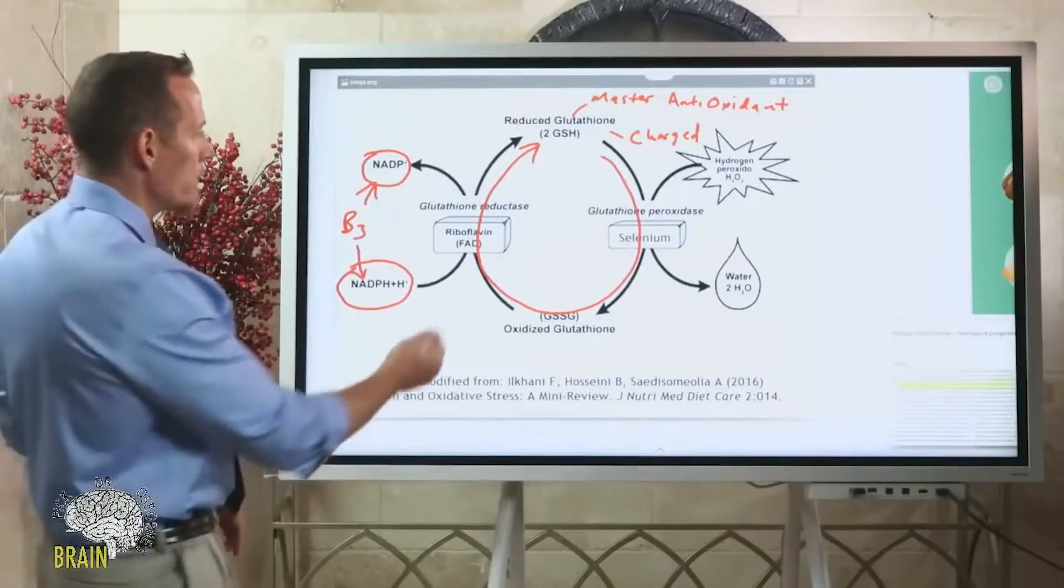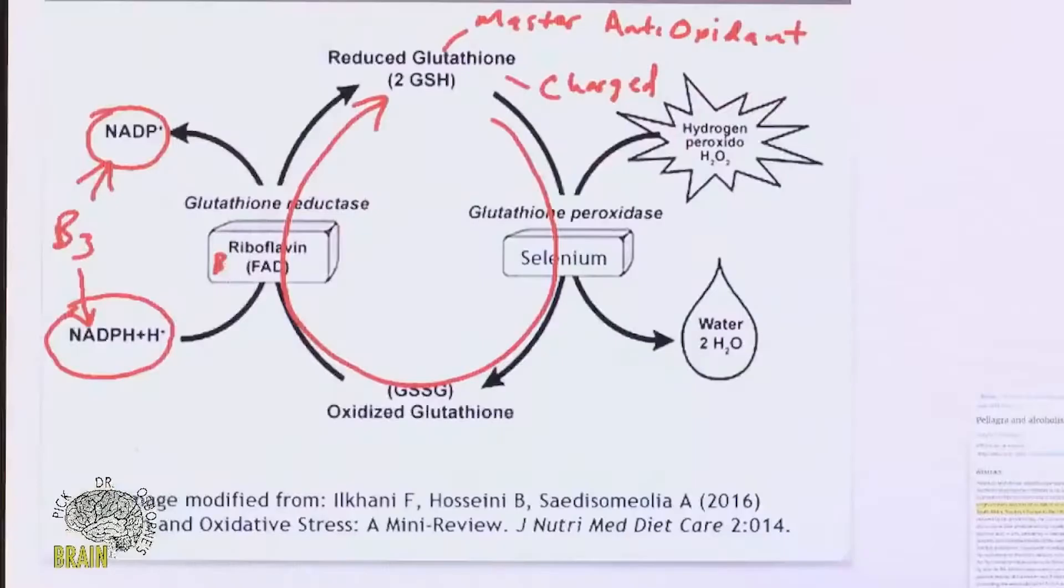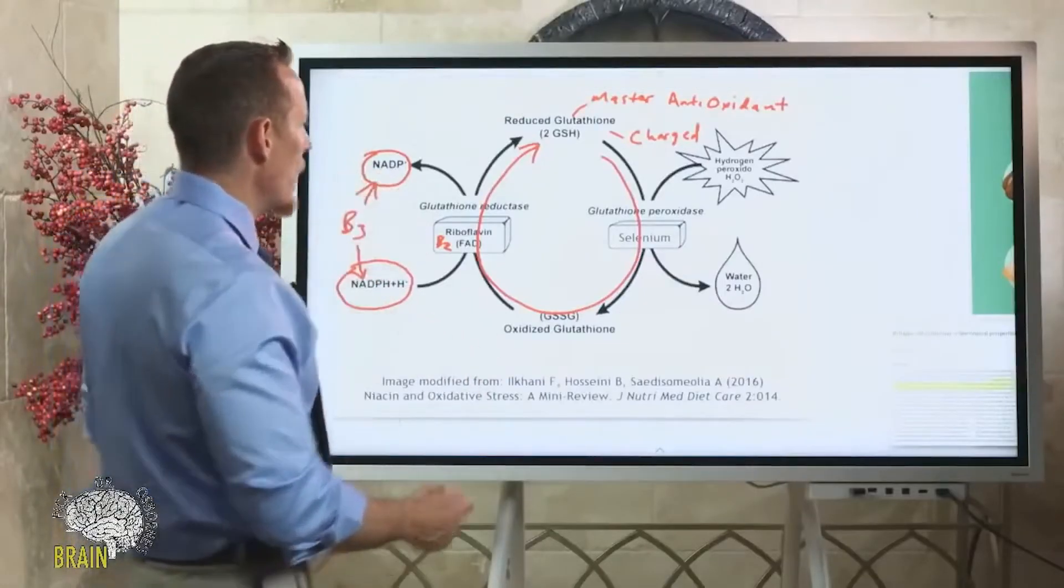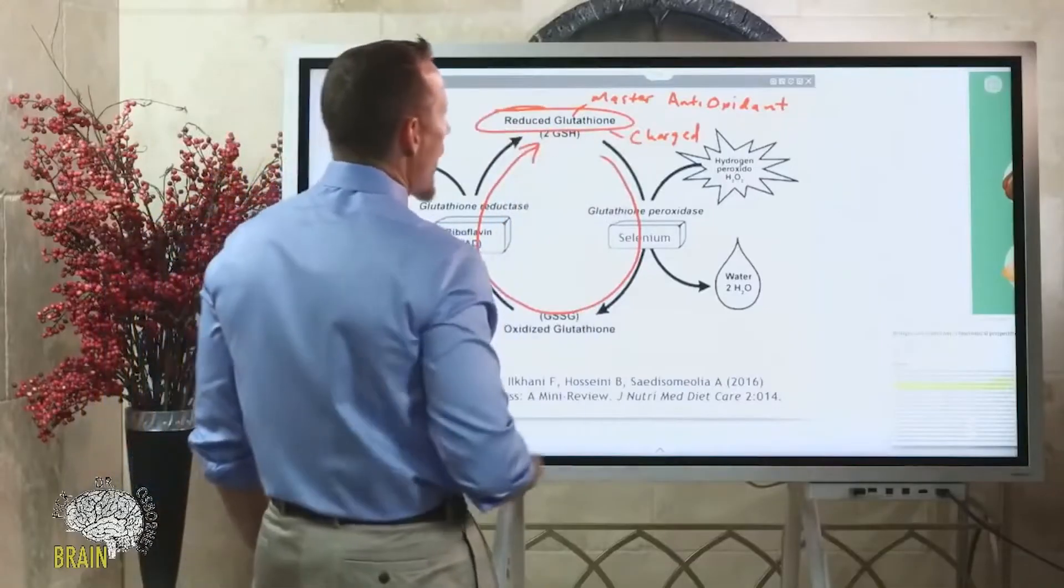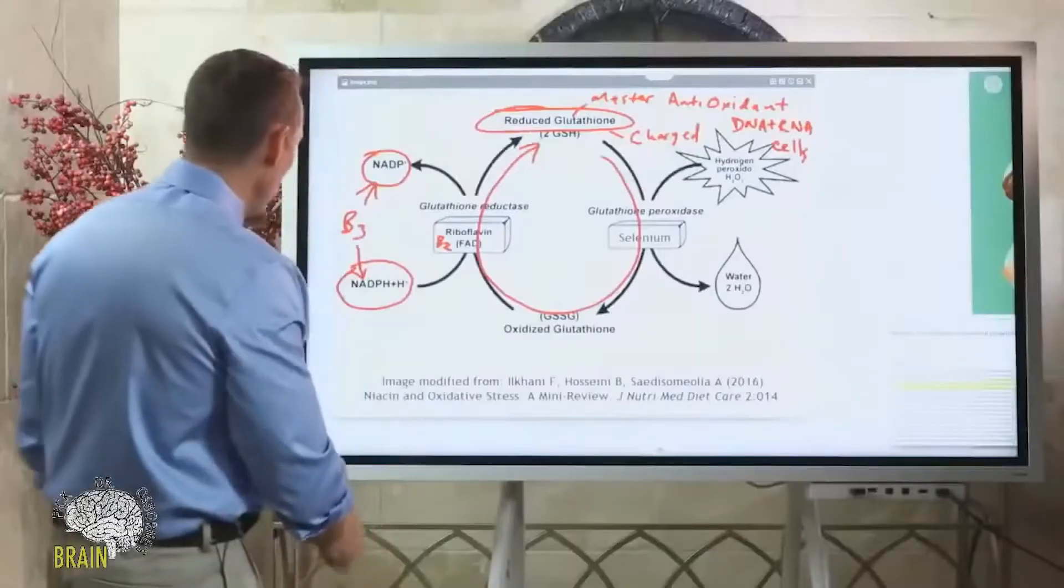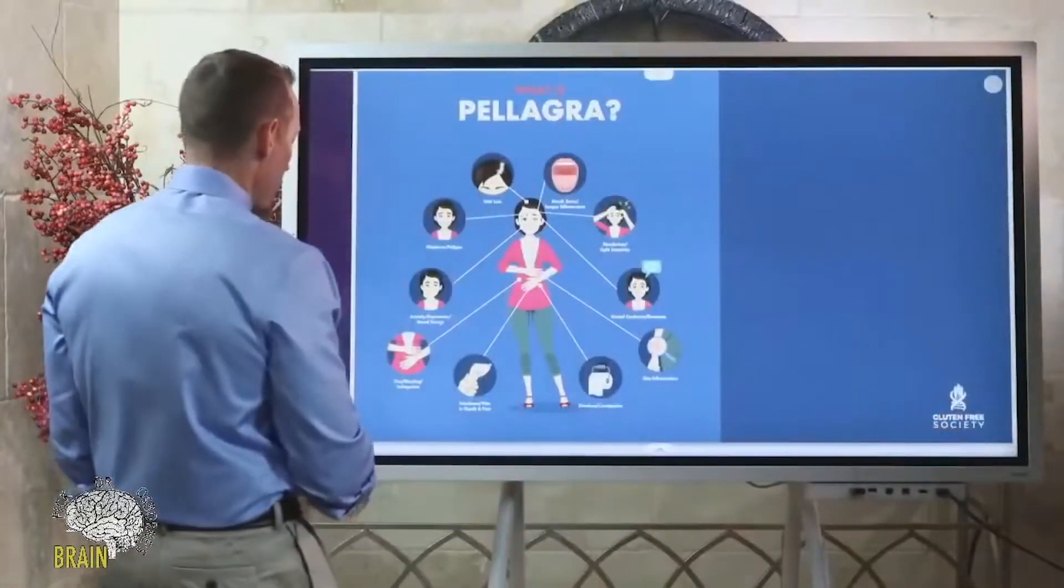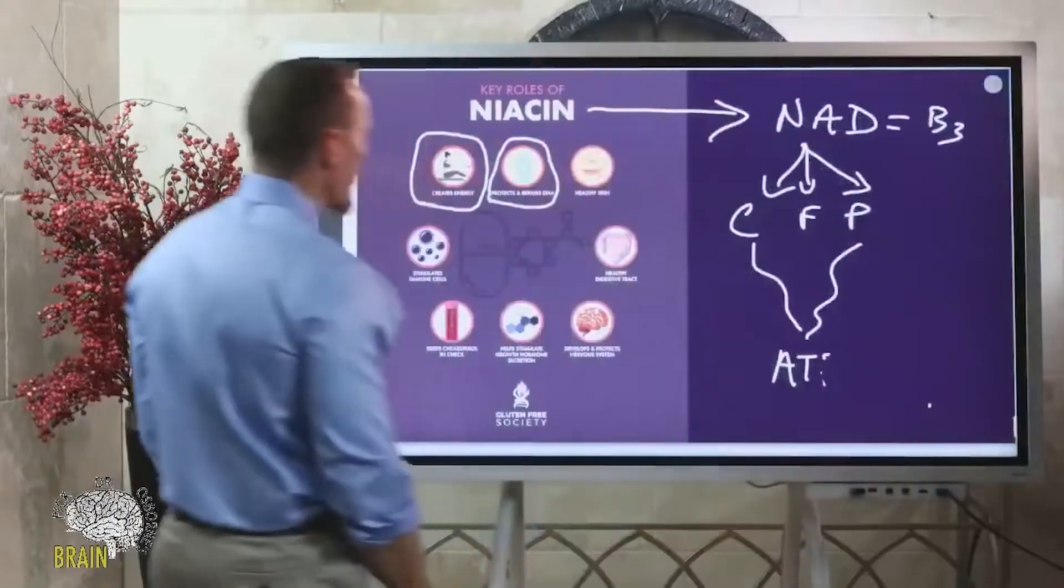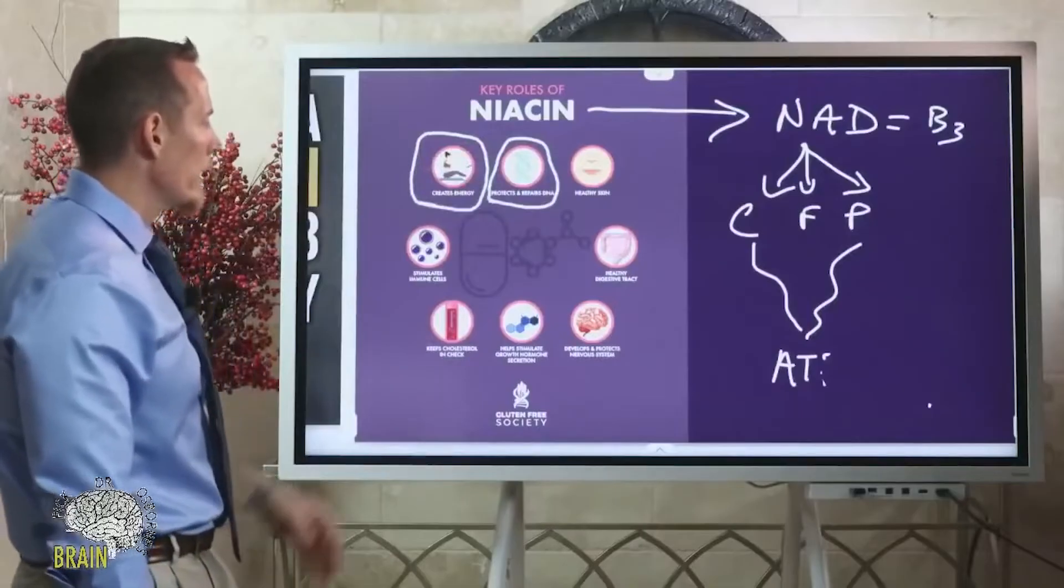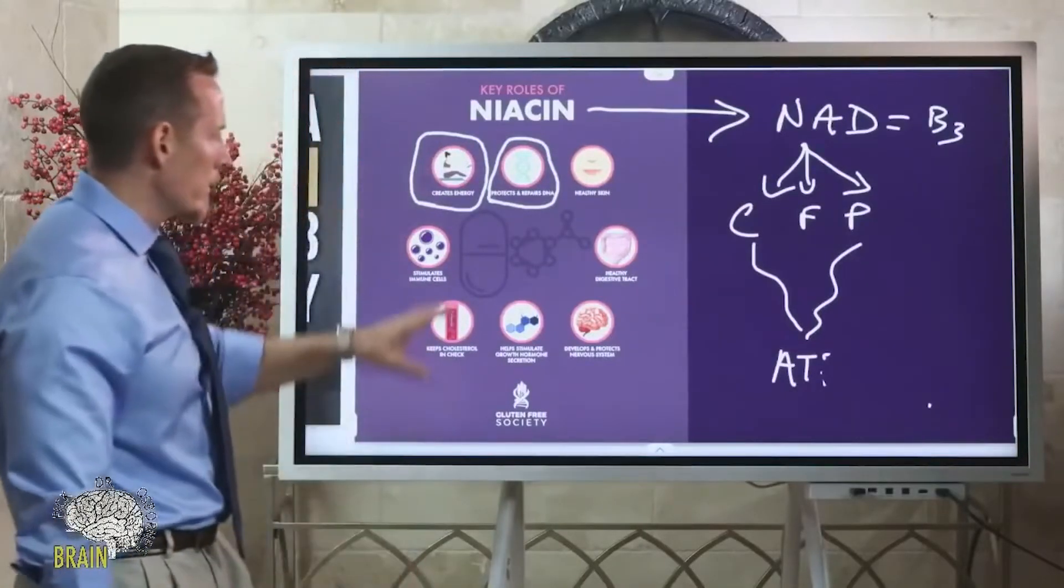You can see riboflavin, which is vitamin B2, also in the middle here, is also required for glutathione. This is why B vitamins work together, tandemly. You've got vitamin B2 and vitamin B3, both responsible for helping to regenerate the master antioxidant that your body uses to basically defend degradation of DNA, RNA, and generally your cells. It helps to defend the functionality and protect your cells.